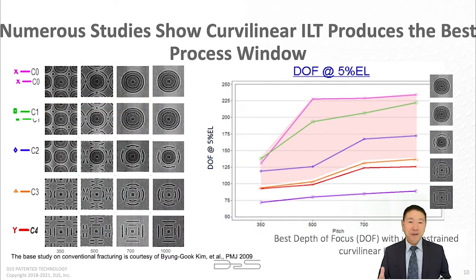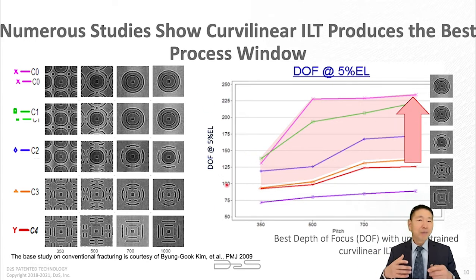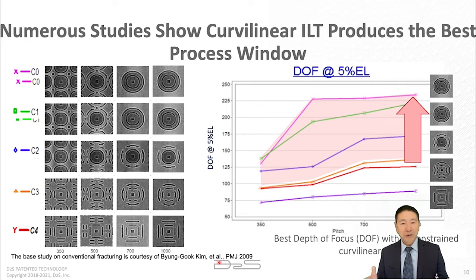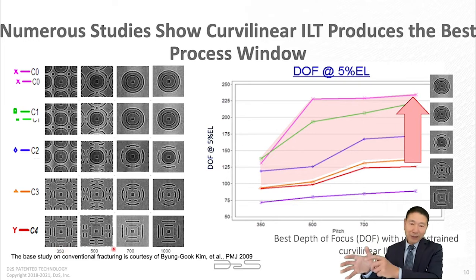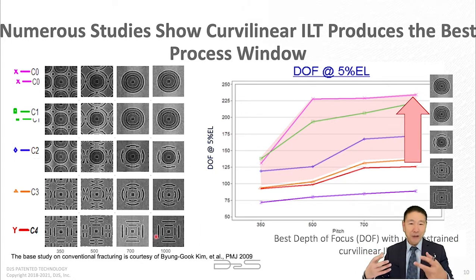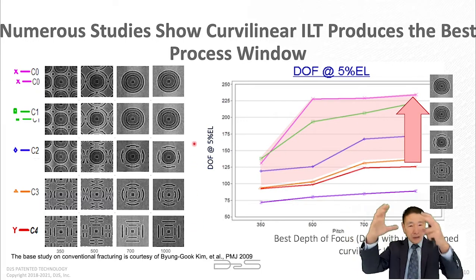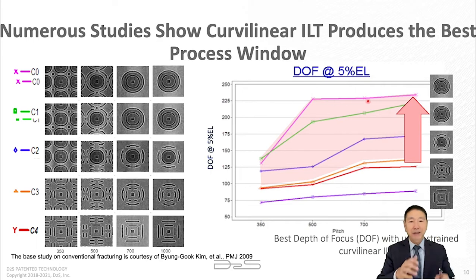There are numerous papers, especially from Luminescent working with partners and customers, showing curvilinear ILT gives the best results in terms of process window. One example from BJ Kim and Samsung, working with Luminescent, shows a compact array where pitch changes from dense to isolated. Luminescent generates different flavors of ILT patterns, from simplified OPC-like scattering bars all the way to ideal curvilinear ILT patterns, and for every pitch the full curvilinear ILT mask pattern gives the largest depth of focus.